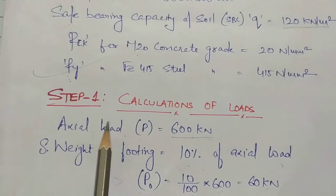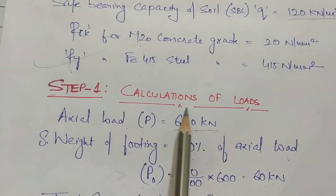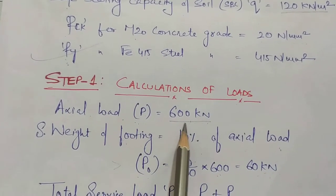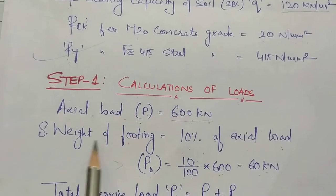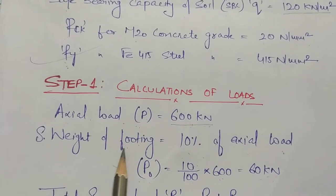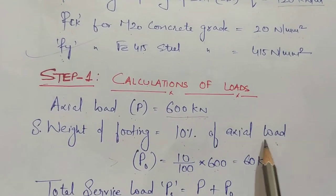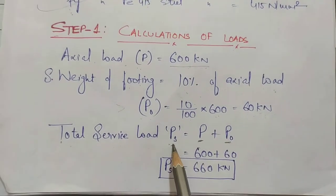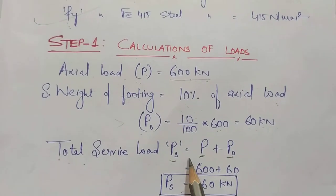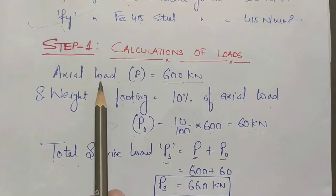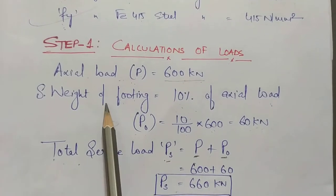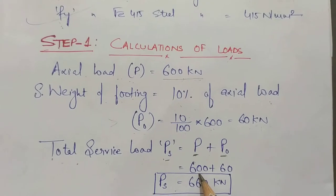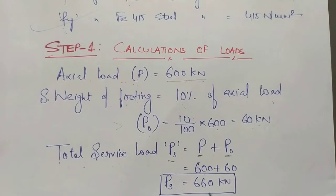Step one is to calculate the loads. The external load P = 600 kilo Newton. We add the self weight of the footing, which is 10% of the axial load, equal to 60 kilo Newton. The total service load PS = P + P_0 = 600 + 60 = 660 kilo Newton.